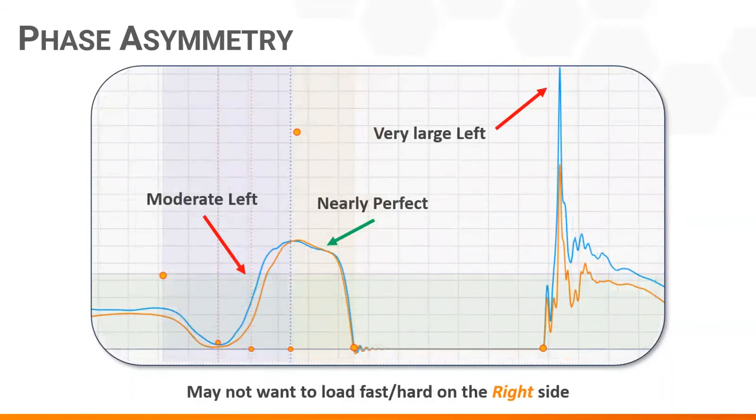Here we see a little bit of a different story. There's a moderate left sided asymmetry in the eccentric phase, a nearly perfect concentric phase, and then a very large left sided asymmetry upon landing.